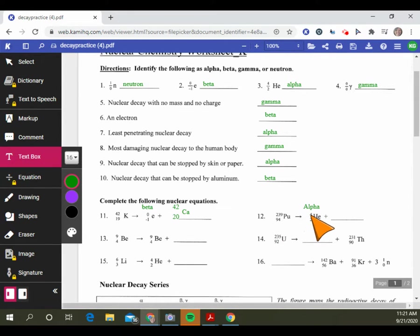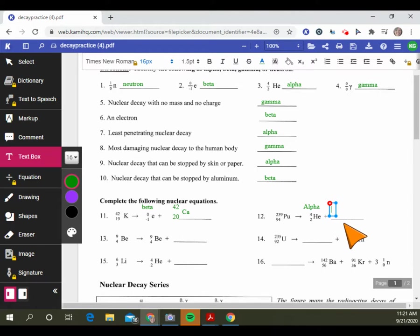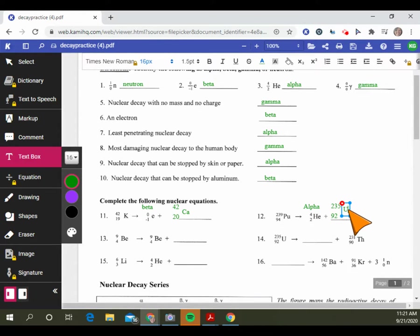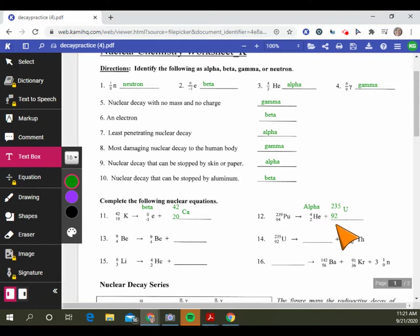So 239 minus 4 is 235, and 94 minus 2 is 92. Which element is number 92? Look at our periodic table, it is uranium. And that's the answer there.